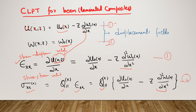Here are the displacement fields for the classical laminated plate theory. The classical laminated plate theory for the beam is the same as Euler-Bernoulli beam theory, where all assumptions are valid: plane sections remain plane and perpendicular before and after bending. Transverse stretching is not allowed — in the transverse direction it is infinitely rigid. We are directly starting with the displacement fields.